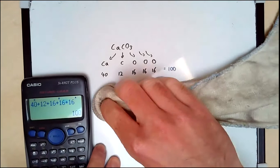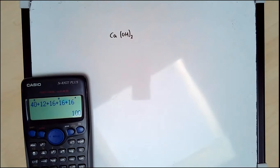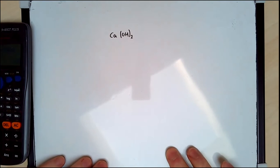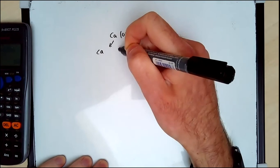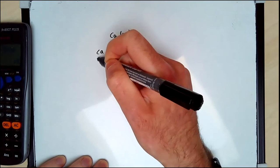We're going to make things a bit more complicated now and go to examples that contain brackets. Let's say we did Ca(OH)2, calcium hydroxide. What this little 2 means is that everything inside the brackets is multiplied by 2. So I've got Ca, then two oxygens and two hydrogens.